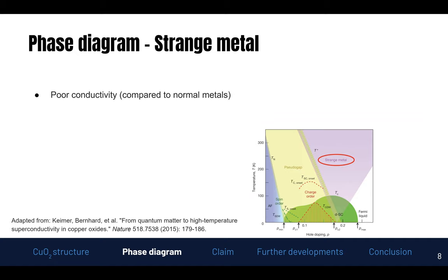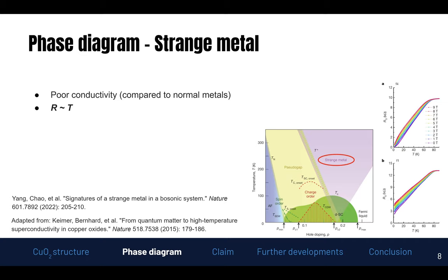But what is a strange metal? A strange metal is characterized by its poor conductivity, which is also why it's sometimes called a bad metal — poor compared to normal metals. What is also very interesting about this regime is that we actually have a resistance that is linearly proportional to the temperature. Usually for normal metals we see a T-squared dependency at first, and then it plateaus out. Here we have linear proportionality.